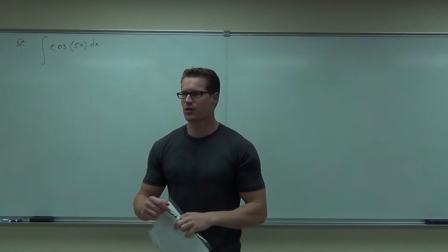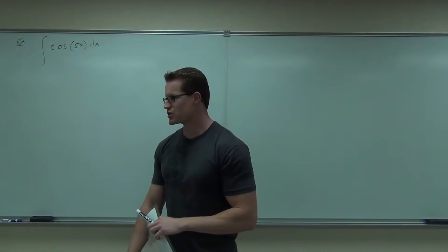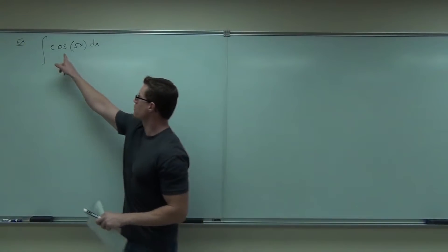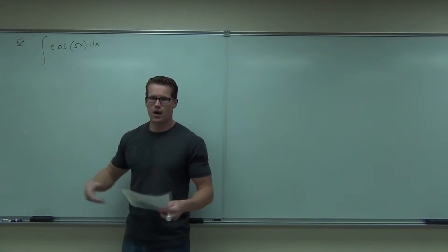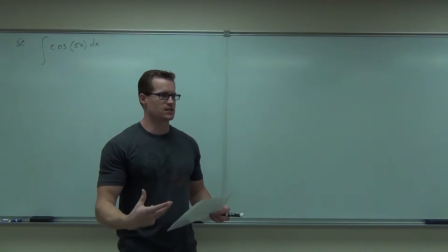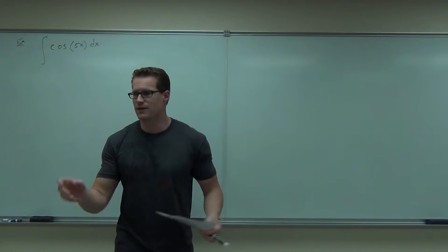The part that's actually giving you a problem. For instance, in this case, the part that is not actually in the integration table. So if I'm looking at this, I know cosine's there, but it says cosine x, not 5x. So what I would pick for the u in this case is the 5x. That's the inside.